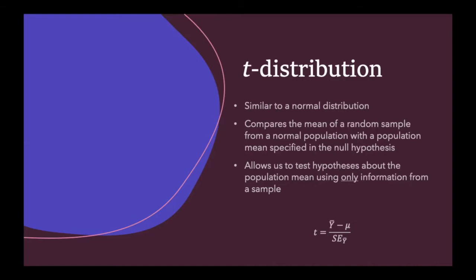We do this by calculating a t-test statistic, which is equal to the sample mean minus the hypothesized mean specified in our null hypothesis, divided by the standard error of the mean calculated from our sample alone. This standard error is calculated as the sample standard deviation divided by the square root of n.